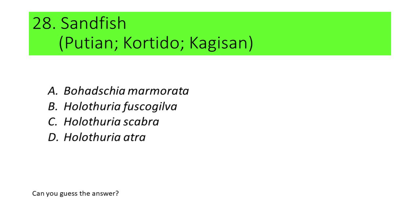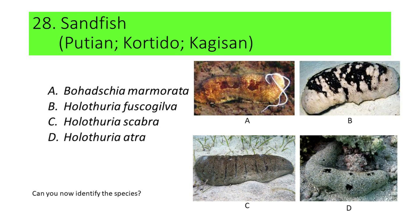If not, here are the pictures. A. Bohadschia marmorata, B. Holothuria fuscogilva, C. Holothuria scabra, and D. Holothuria atra. Can you now identify the species? If not, here's another hint. This species has a dark, grayish body. If your answer is C or Holothuria scabra, you're correct. Holothuria scabra is commonly called sandfish, and locally called putian, cortido, or kagisan.